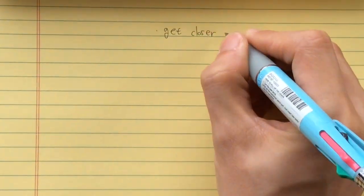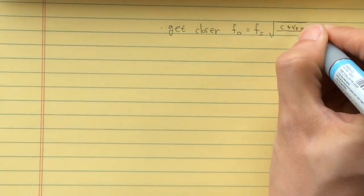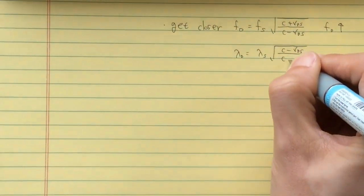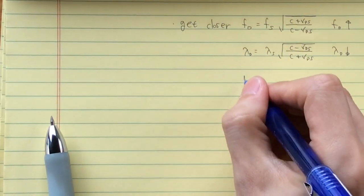When the detector and the source are getting closer, the detected frequency is getting higher and the detected wavelength gets shorter. This is called blue shift.